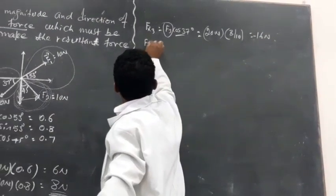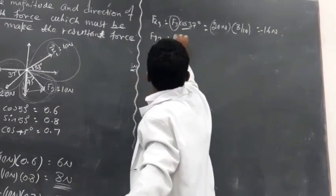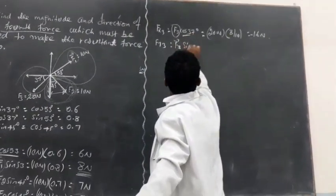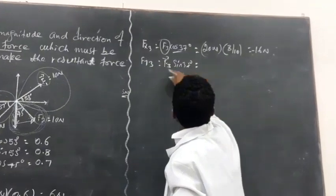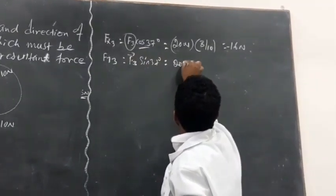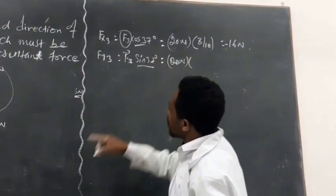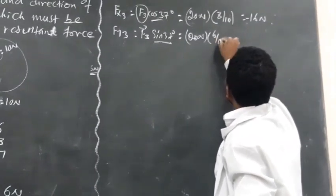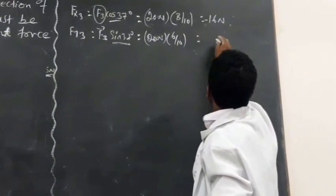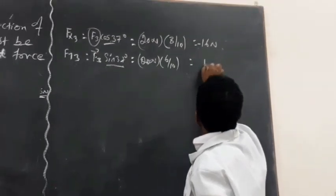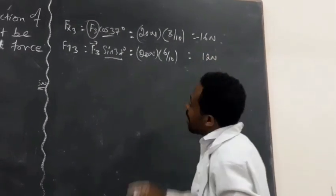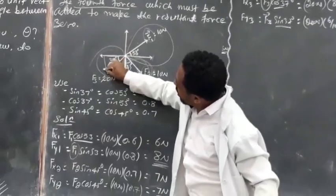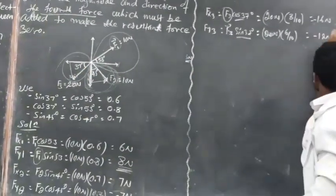F3y equals F3 times sine 37 degrees. F3 is 20 newtons and sine 37 degrees is 0.6. So that gives 12 newtons, but it should be negative.